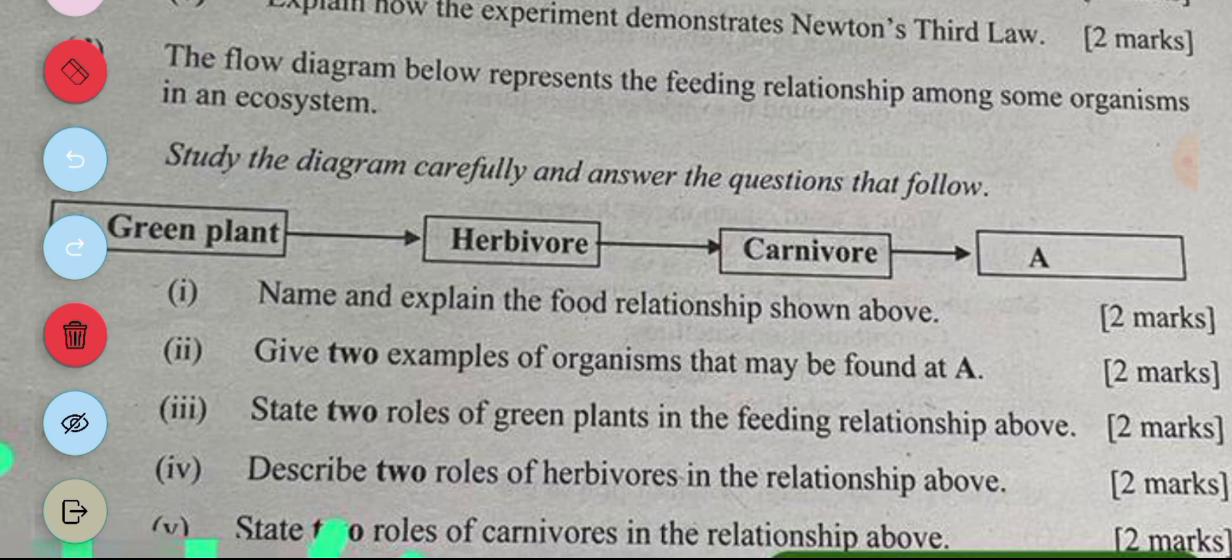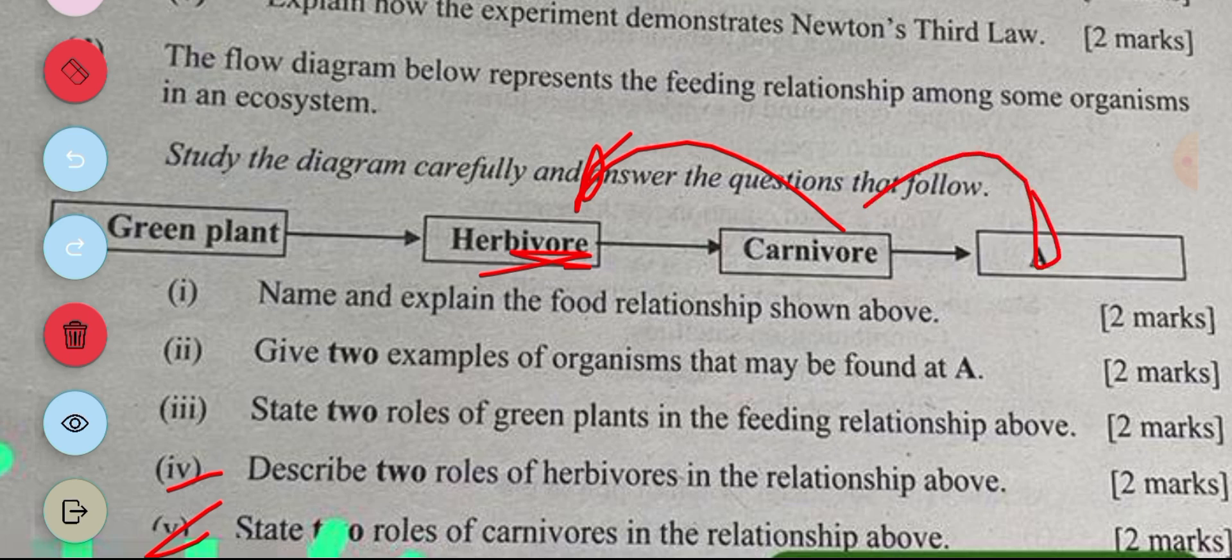Then the next question is to describe two roles of herbivores in the relationship above. In this relationship, the herbivore feeds on the green plant, that's one. And the herbivore serves as food for the carnivore. The next question is the two roles of carnivores in the relationship above. The carnivore feeds on the herbivore and the carnivore also serves as food for the A, which is or which could be a decomposer.